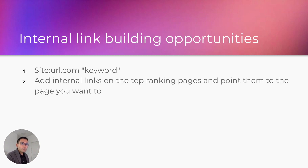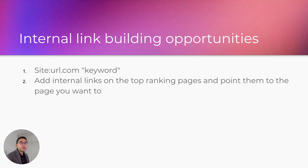That's one way to fix cannibalization issues. For finding internal link building opportunities, one way is to use the site: search operator with a keyword. For example, put 'site:yourdomain.com "personal injury lawyer"' into Google, and whatever Google shows you on the first page are the most topically relevant pages. Add internal links on those top-ranking pages pointing to the page you want to increase rankings for.